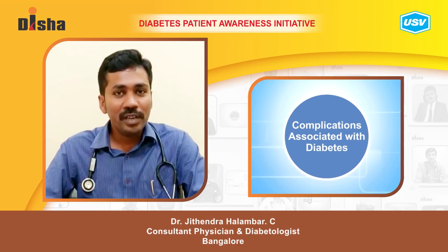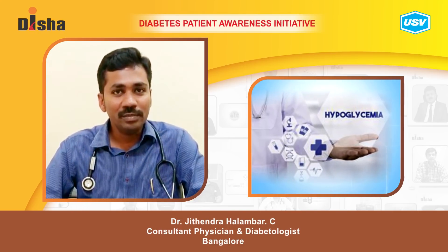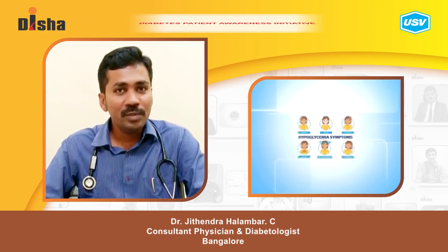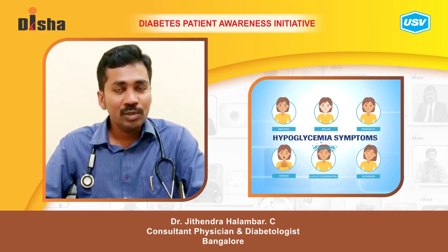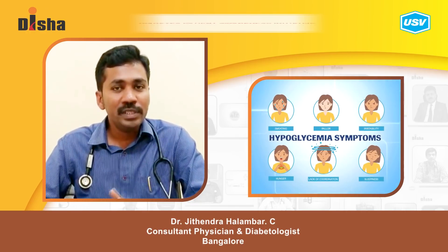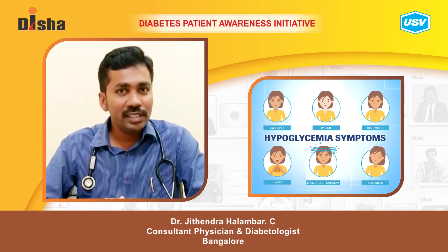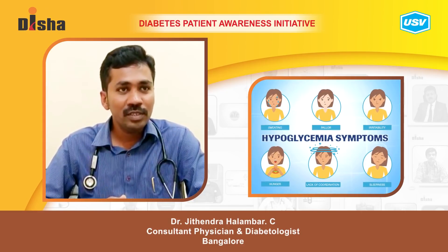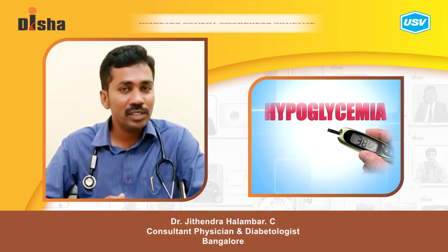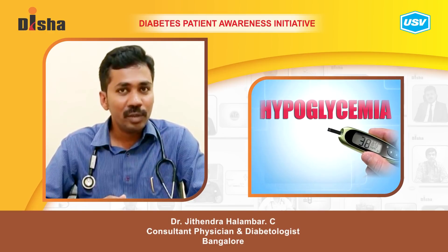Another complication of diabetes is the acute complication of hypoglycemia. Symptoms of hypoglycemia include easy fatigue, palpitations, increased heart rate, sweating, nervousness, and anxiety. Hypoglycemia is defined as blood glucose levels going below 70 mg/dL, which causes these symptoms.